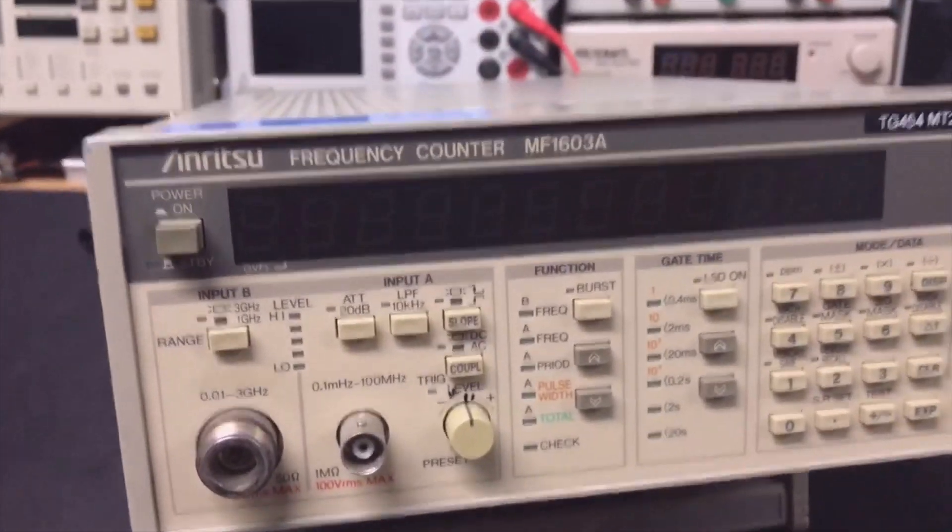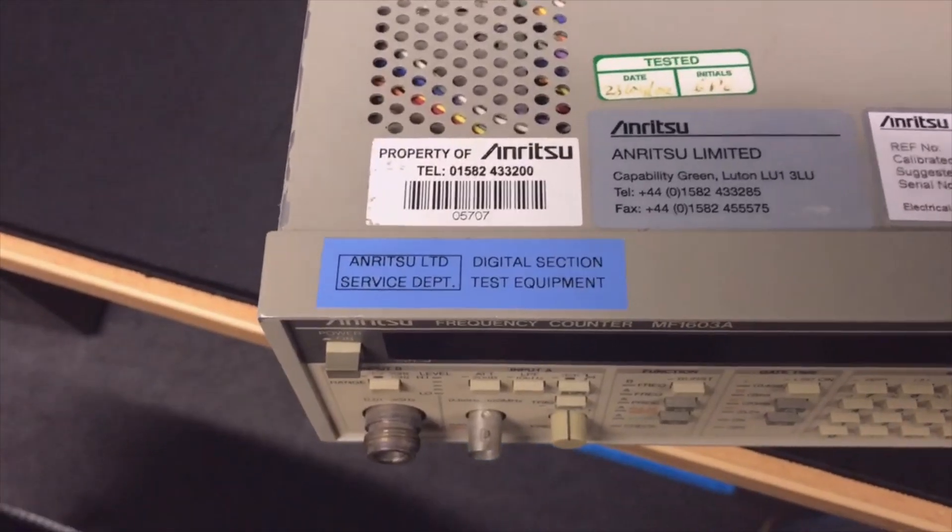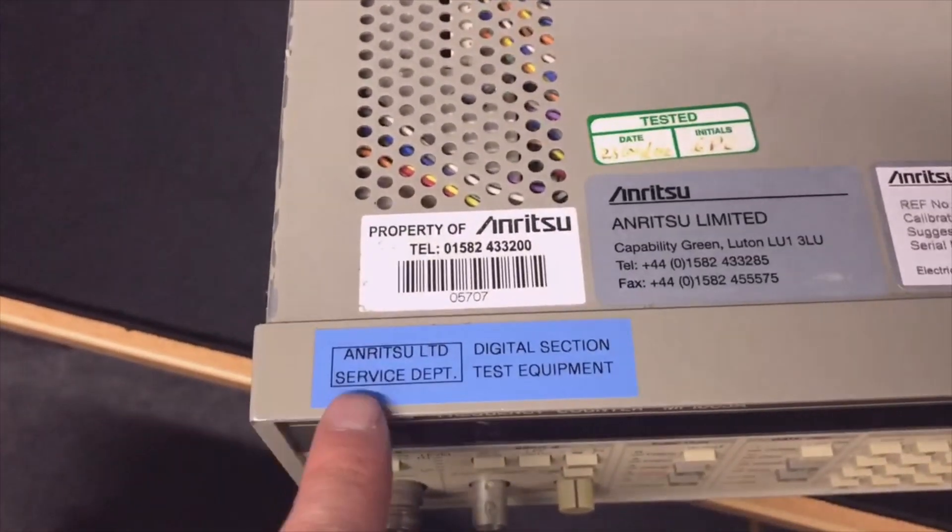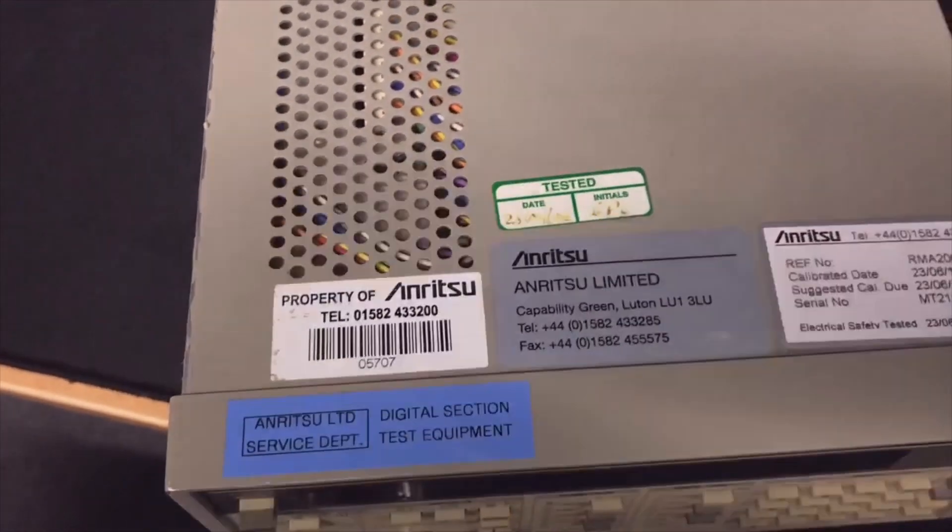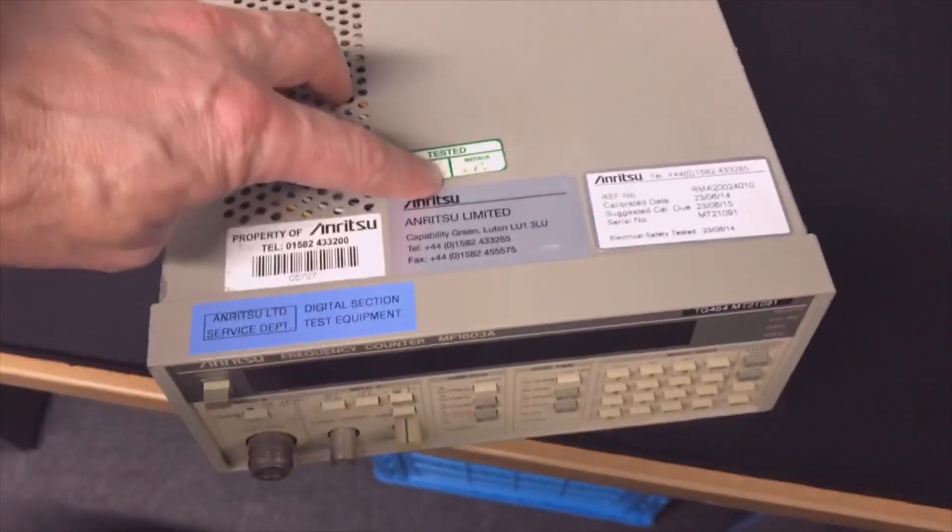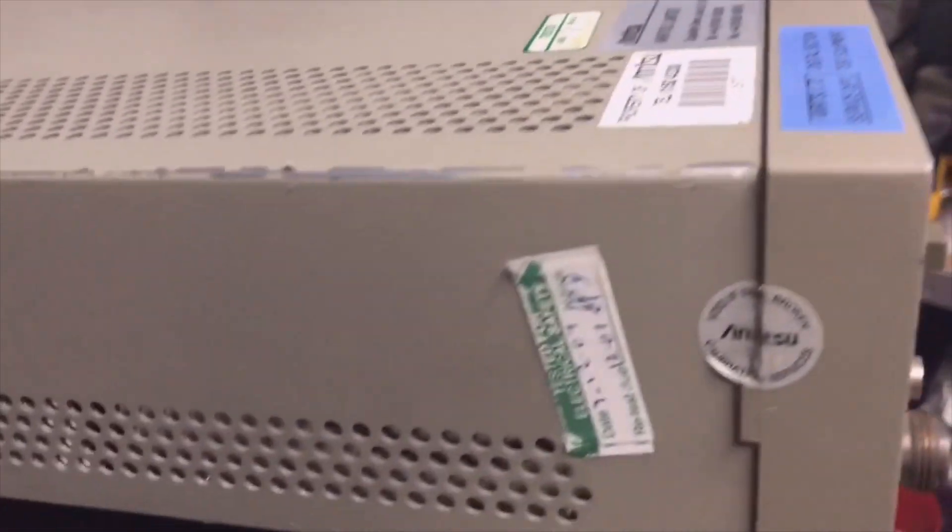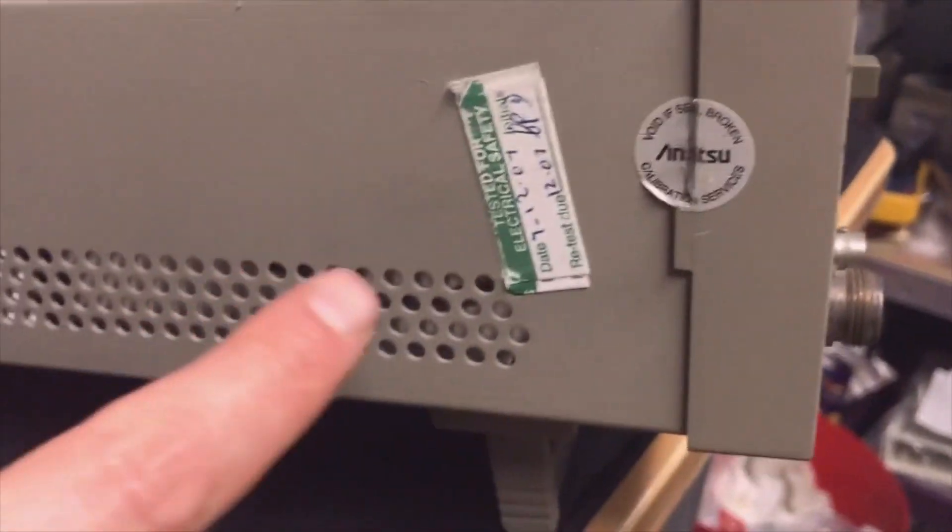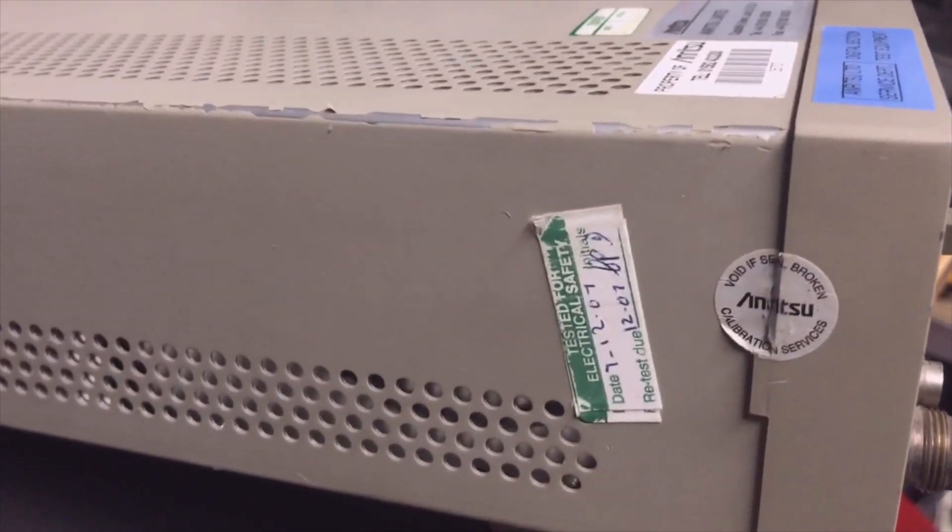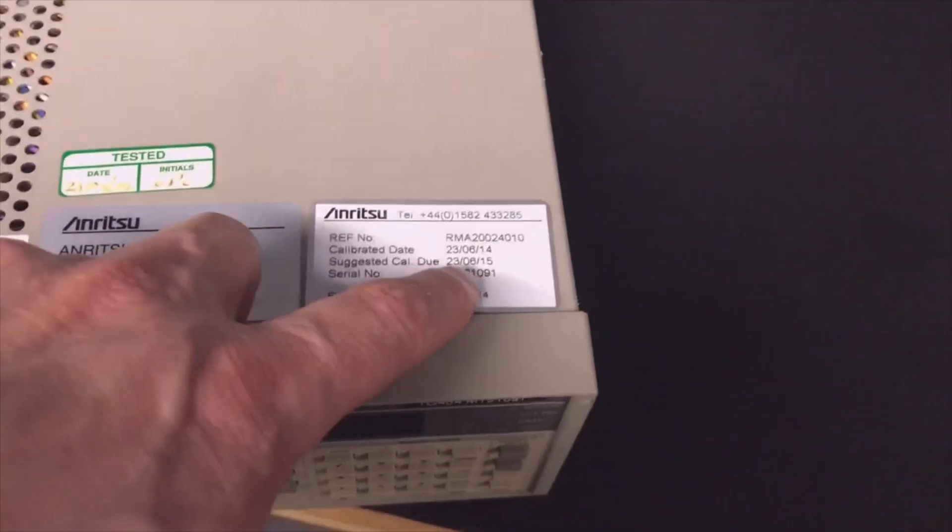On the top we see a lot of stickers. I like to see that it's always been at Anritsu. That is a nice sticker of 2002, here a sticker of 2001, and it already said retested, so it's probably from before 2000. The calibration was until 2015, so it's not too far off, only five years.